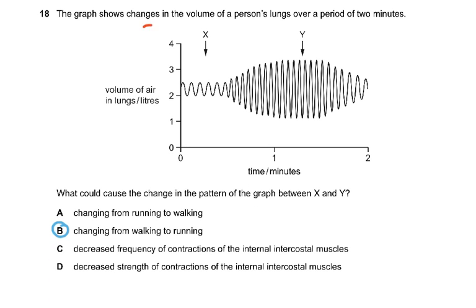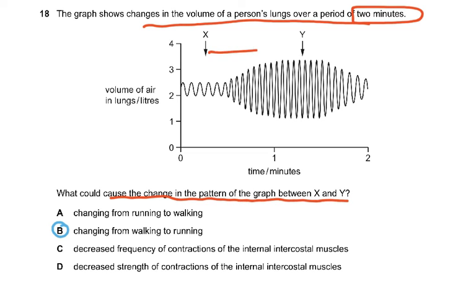Question 18: The graph shows changes in the volume of a person's lung over a period of two minutes. This has come in the previous variant as well. What could cause the change in the pattern of the graph between x and y? Changing from walking to running, that would be because this is more exercise. Walking is slower exercise. It doesn't take a lot, you don't get out of breath or inhale and exhale this deeply. The rate and depth of breathing increases.